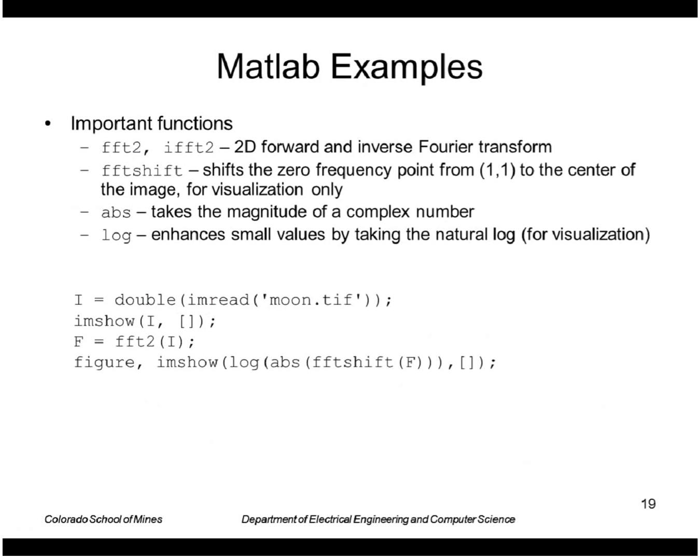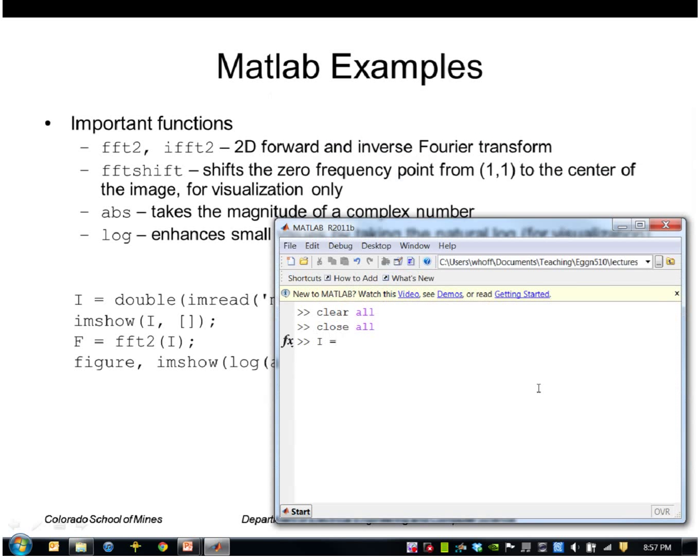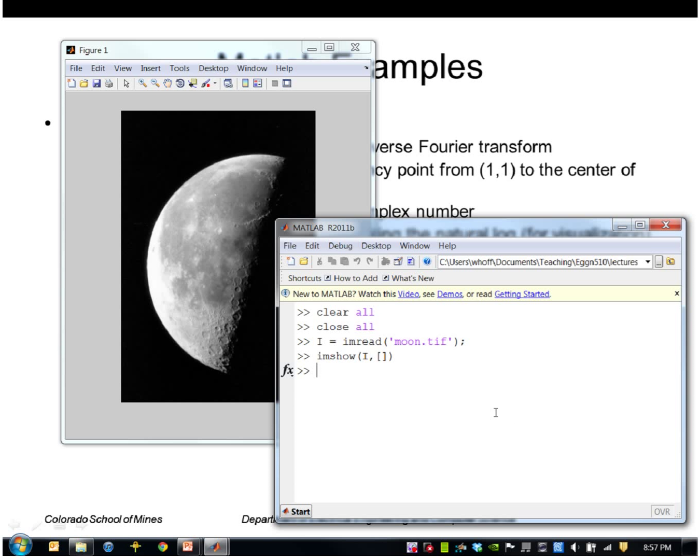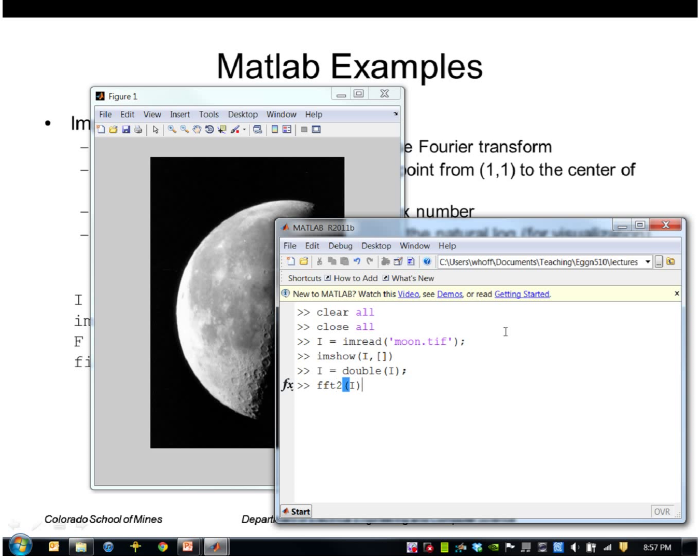Let's look at an example using MATLAB. So MATLAB has a two dimensional Fourier transform function called FFT2 and the inverse version IFFT2. So I'll go ahead and read in this image. Then a Fourier transform, which is FFT2, and I'll put that into a value called F.